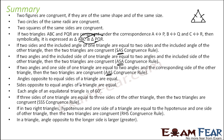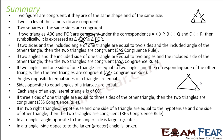In a triangle, the angle opposite the longer side is greater. So if an angle is more, the opposite side is more; if an angle is less, the side is less. Larger the side, larger the angle; smaller the angle, smaller the side. And the sum of any two sides of a triangle is greater than the third side.